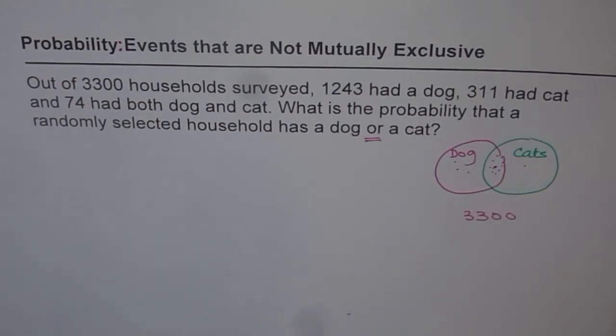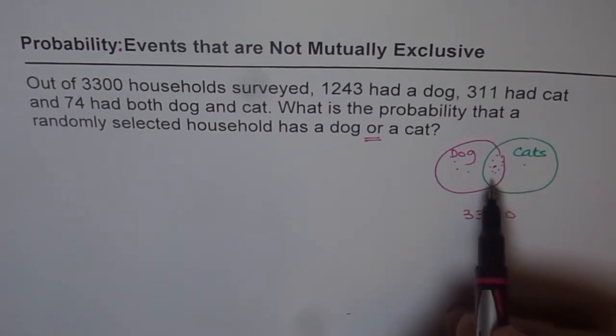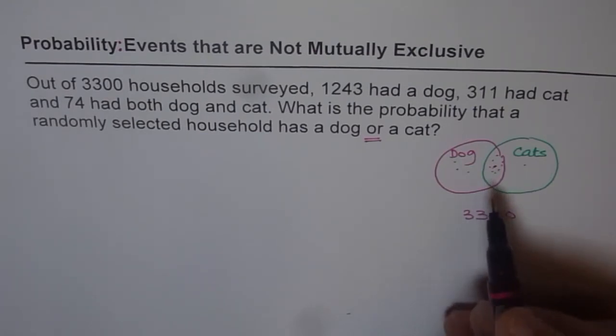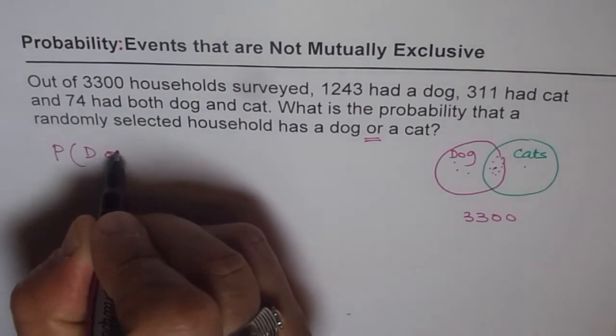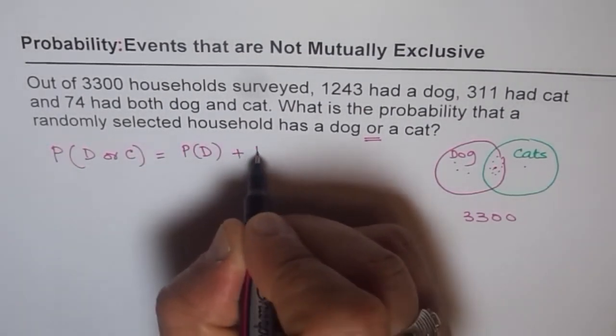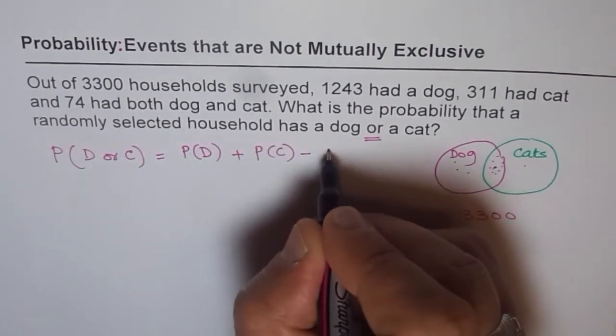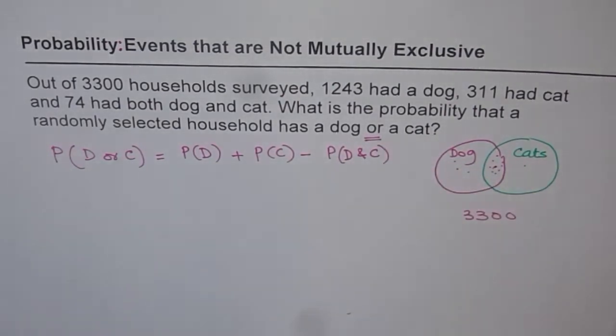the households which have both dog and cat twice. So we need to take it out or find the difference. Now, that is what mutually exclusive events are. So mutually exclusive are, when we say there are two events, A or B, then there are many of them which are common. Therefore, they are not exclusive. So those common elements have been counted twice. So we need to take them out once we find the probability. So what we are trying to say is, in this particular case, probability of dog or cat means probability of having dog plus probability of having cat minus probability of having dog and cat. Both dog and cat.